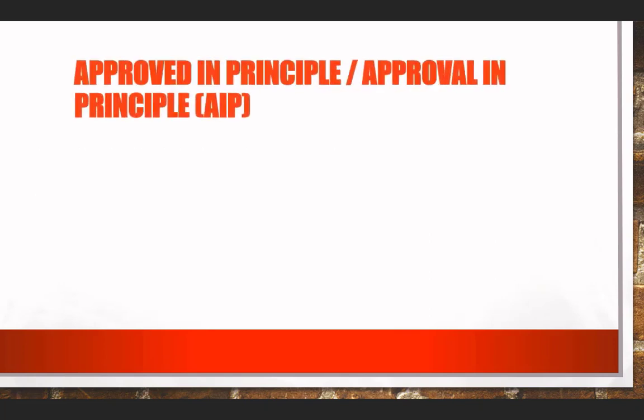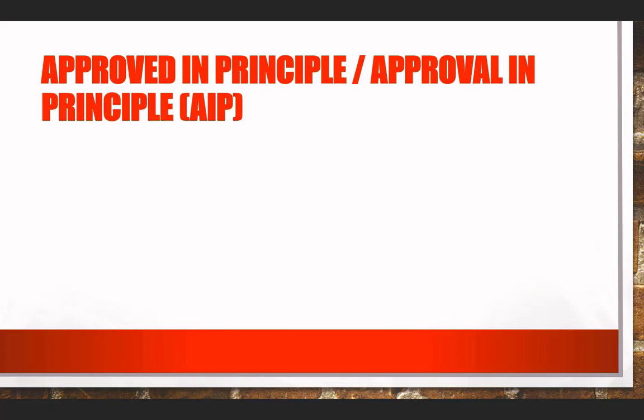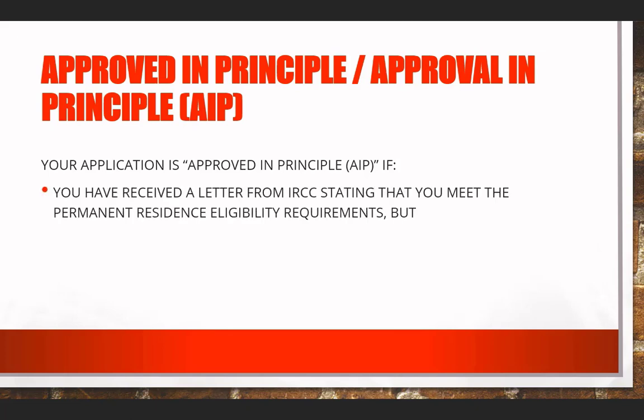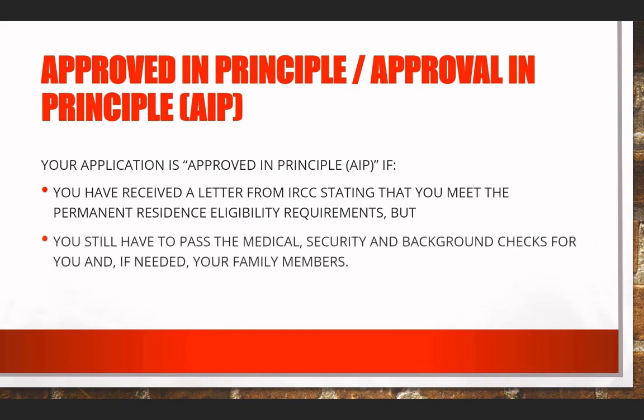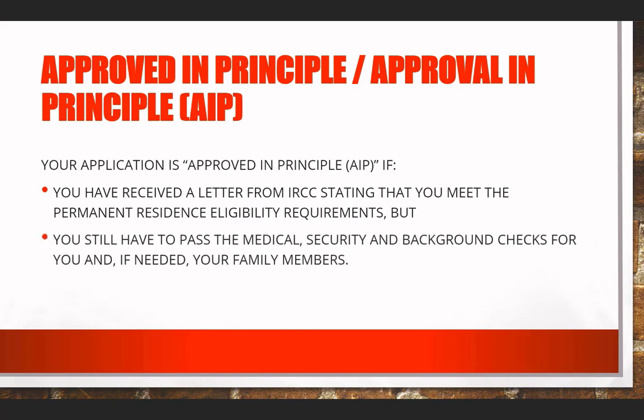Approved in principle or approval in principle (AIP): your application is approved in principle if you have received a letter from IRCC stating that you meet the permanent residence eligibility requirements, but you still have to pass the medical, security, and background checks for you and, if needed, your family members.